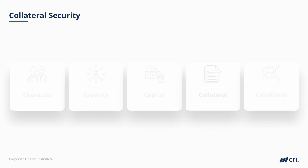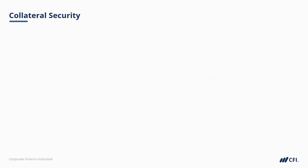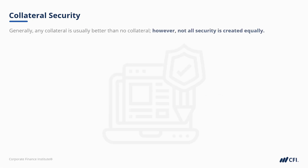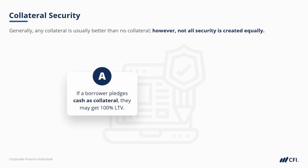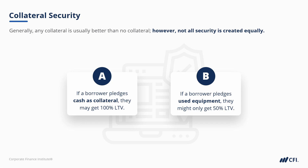The final C to address here is collateral. As a general rule, any collateral is usually better than no collateral. However, not all security is created equally. The desirability and overall quality of physical assets being pledged as collateral will influence some important borrowing parameters. The first is loan to value, or LTV. If a borrower pledges cash as collateral, they may get 100% loan to value — meaning dollar for dollar — whereas if they pledge used equipment, they may only get 50% loan to value, or 50 cents on the dollar.